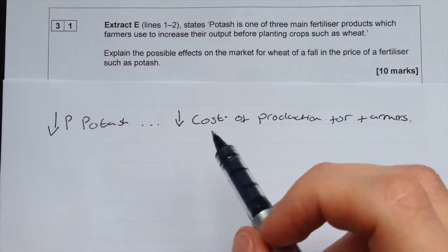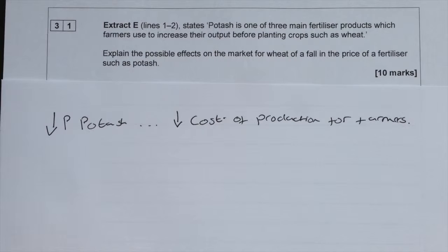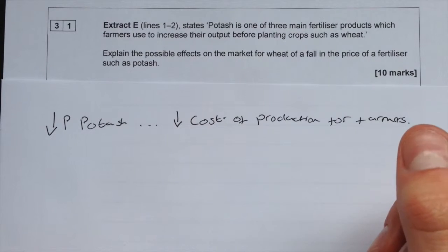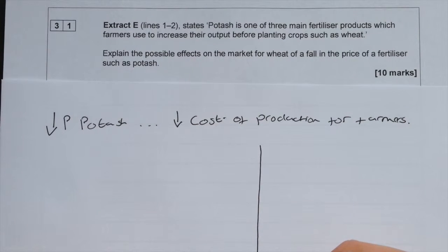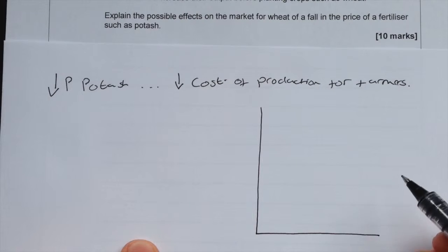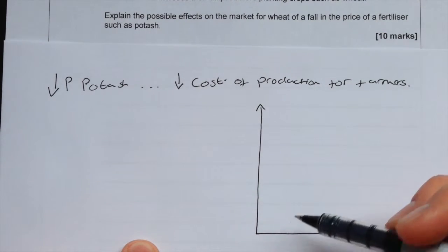As one of their factors of production, fertilizer, has decreased in price, this means that farms would be more willing to supply more of this good to the market. This is represented by a shift in the supply curve shifting outwards.